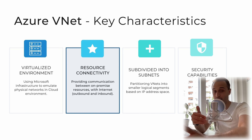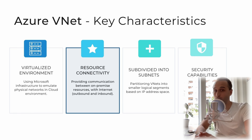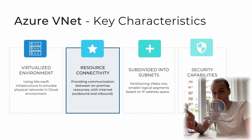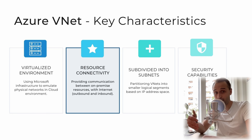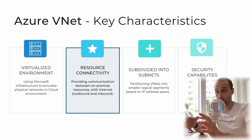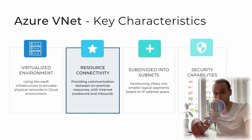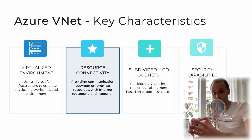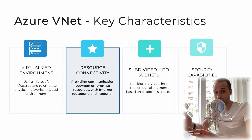Azure goes beyond just on-premise connectivity and also provides connectivity to the public-facing internet. For example, if we have a web application running in Azure and want to make it accessible to users on the internet, Azure makes it easy by offering public IP addresses and load balancers, allowing our application to have a public-facing presence. In a nutshell, Azure enables connectivity between on-premise resources, the internet, and Azure resources, bridging the gap between our existing infrastructure and the cloud for seamless communication.